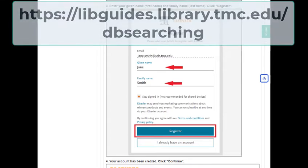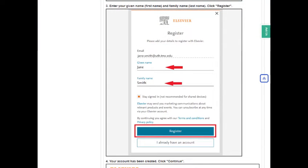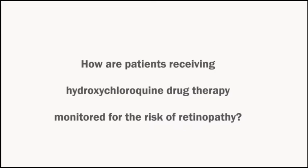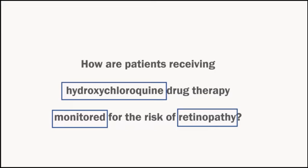Let's use the following example research question: How are patients receiving hydroxychloroquine drug therapy monitored for the risk of retinopathy? The main concepts in this research question are hydroxychloroquine, retinopathy, and patient monitoring. It's essential to search each of these concepts separately, using both subject headings and keywords.